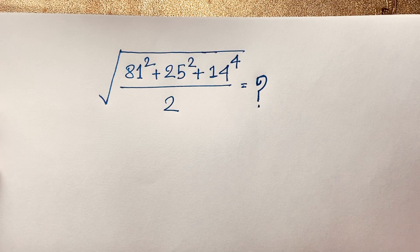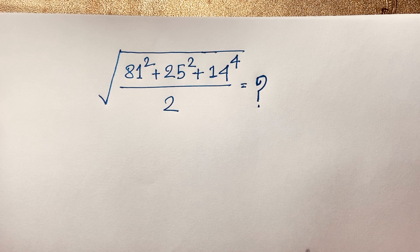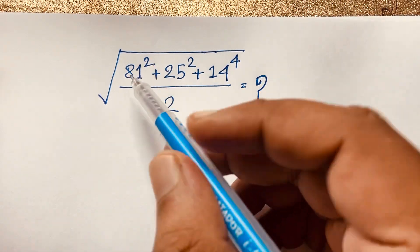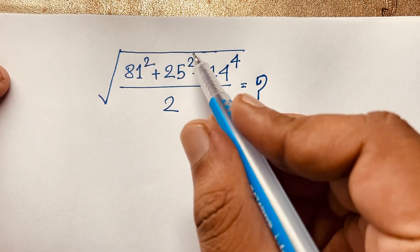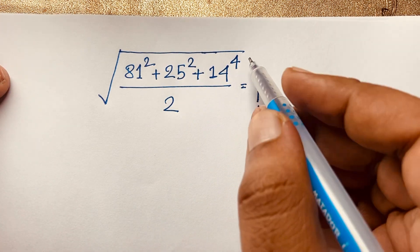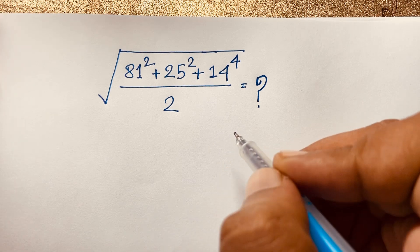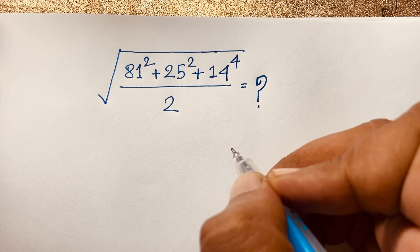Hello everyone, welcome to the classroom. Today we have a nice square root math problem — a radical math problem. It is the square root of 81 squared plus 25 squared plus 14 to the power 4 over 2, equal to what. We will solve this question without a calculator.